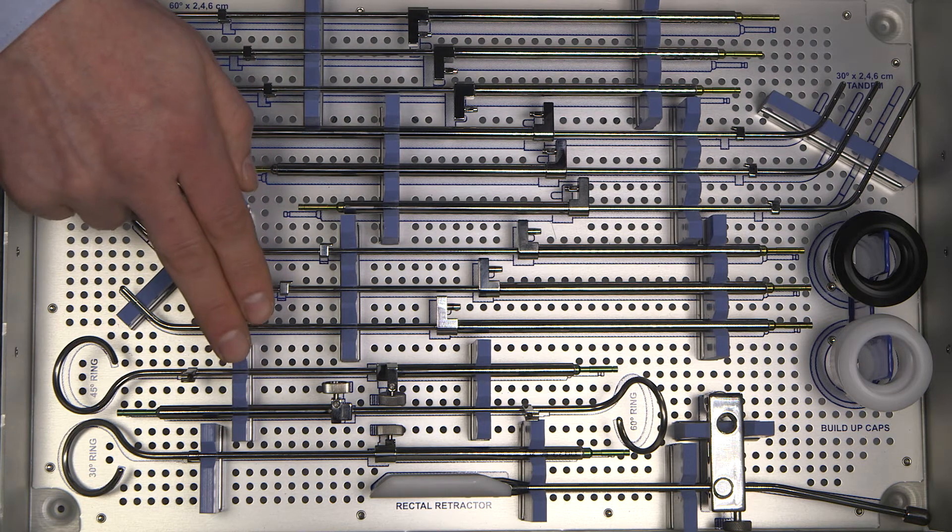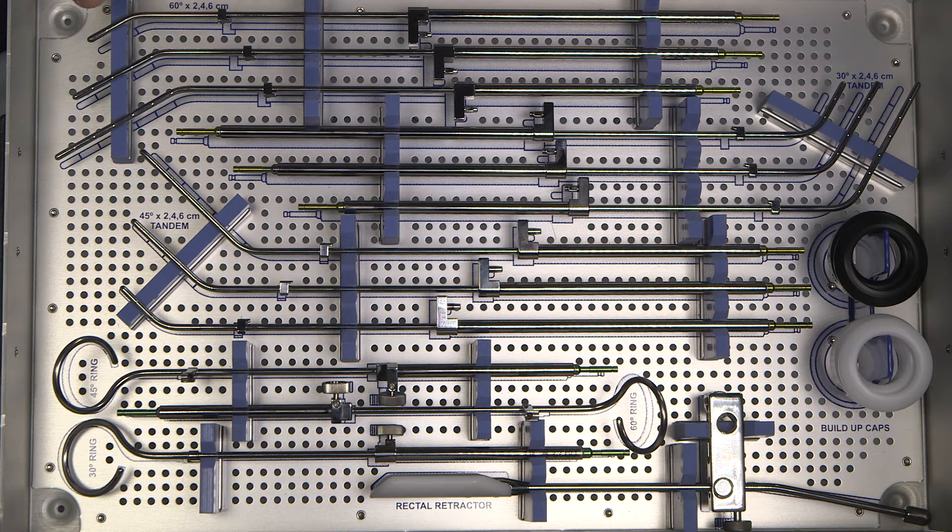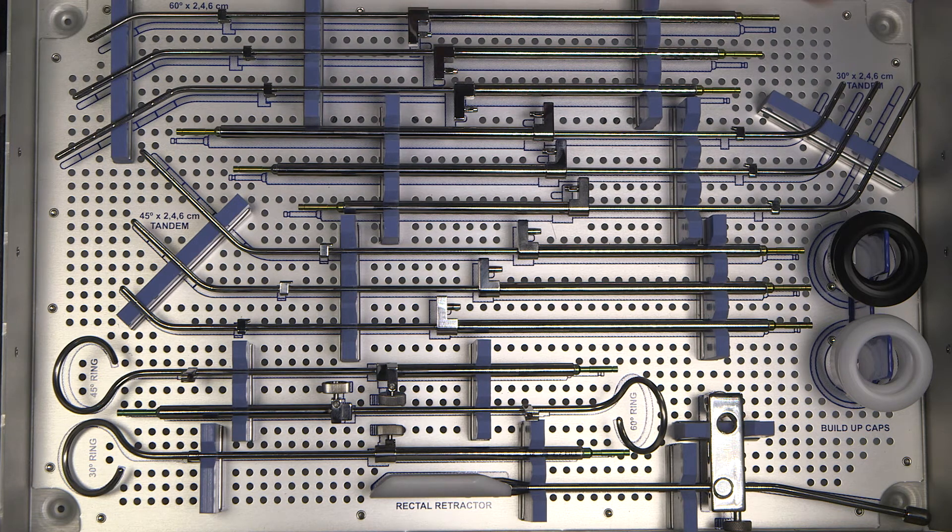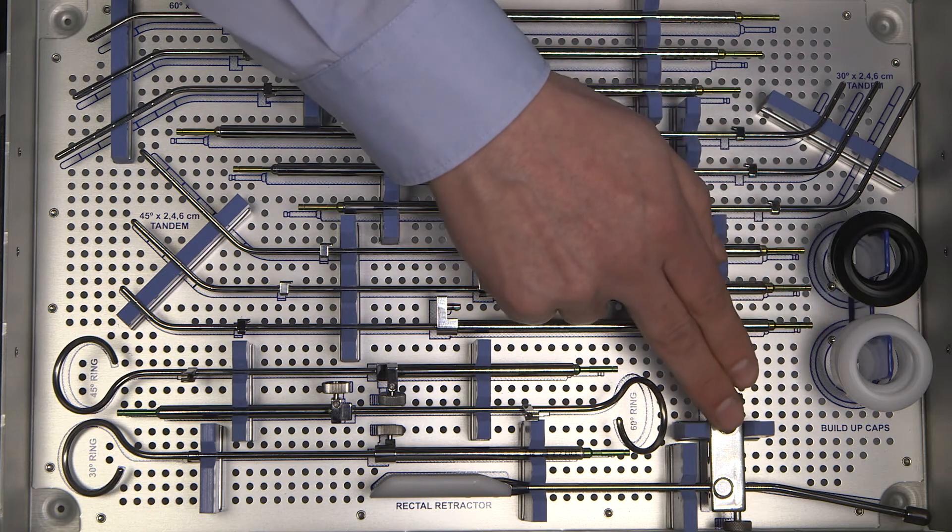The set consists of rings in three different angles together with the corresponding IU tubes that are available in 2, 4, and 6 cm lengths. It contains 5 and 7.5 mm buildup caps and a rectal retractor.